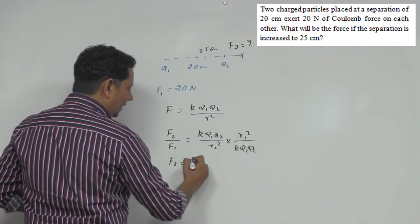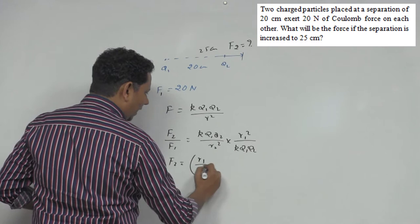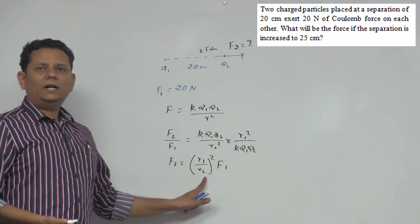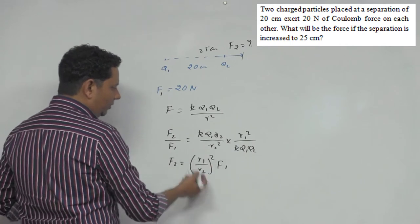Which means F2 equals F1 times R1 divided by R2 squared. So this will be R1 divided by R2 squared multiplied by F1. Now R1 and R2 are given as 20 and 25.